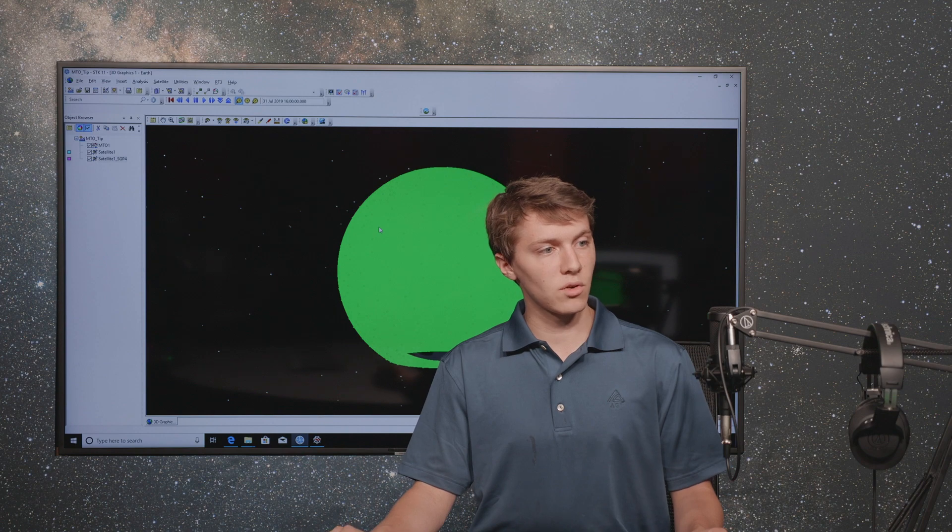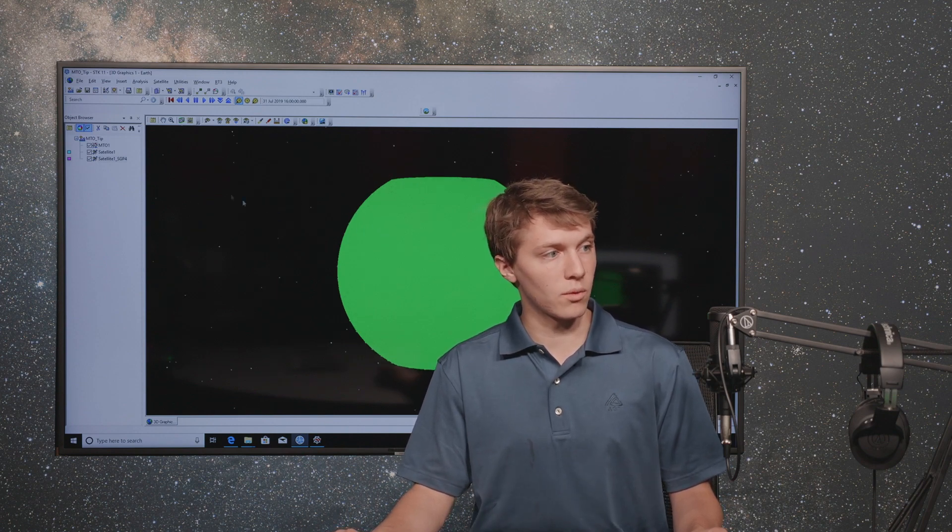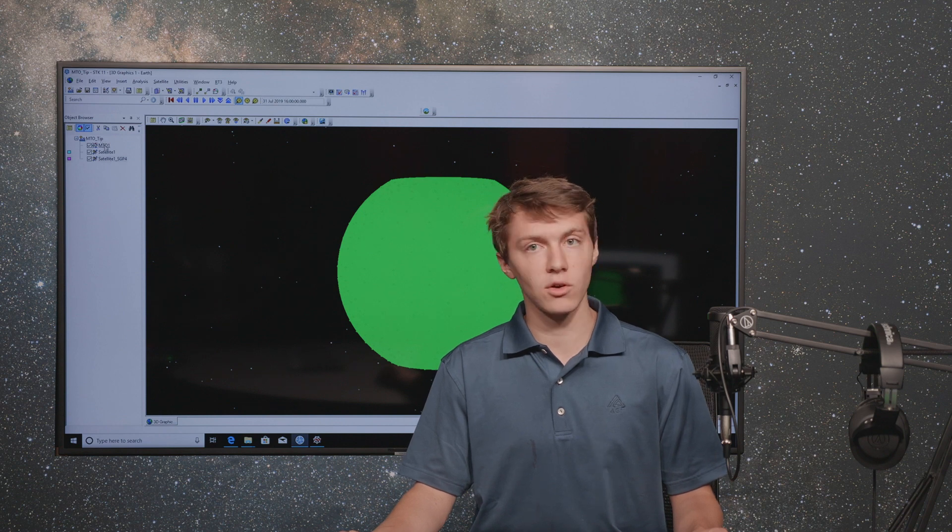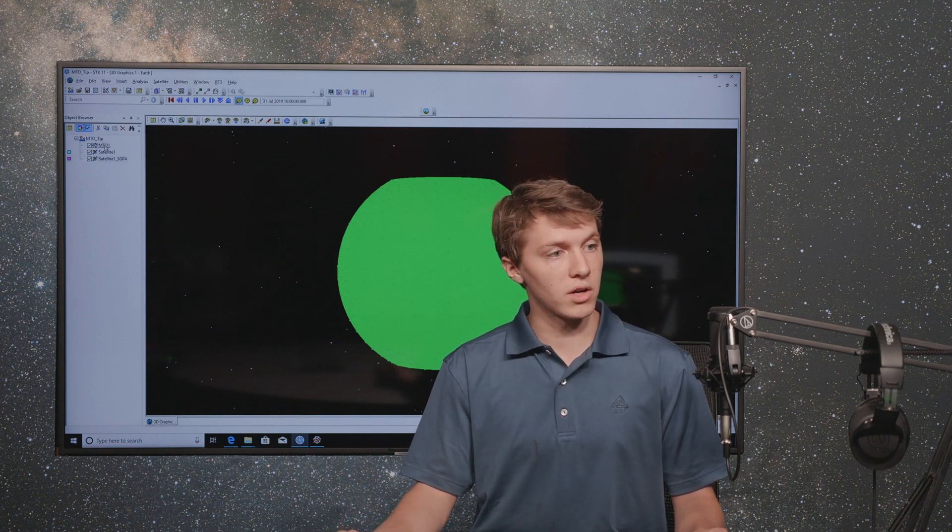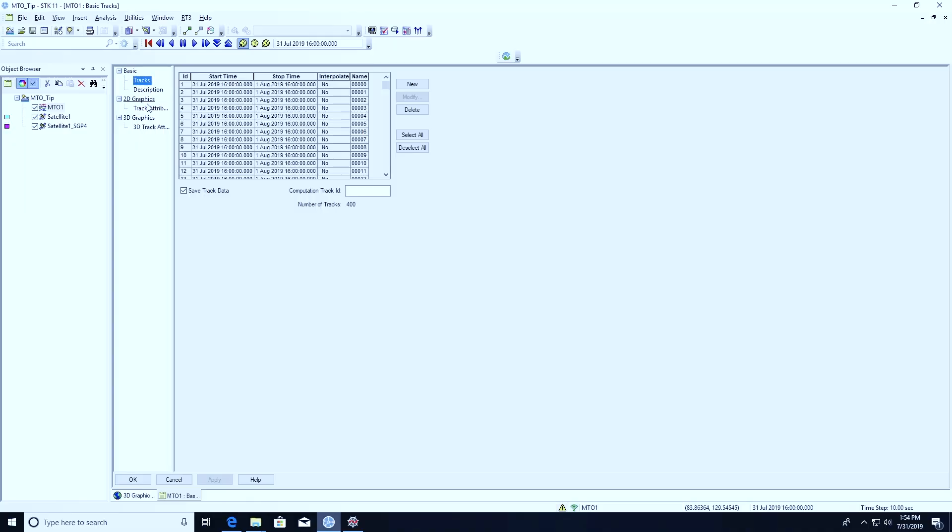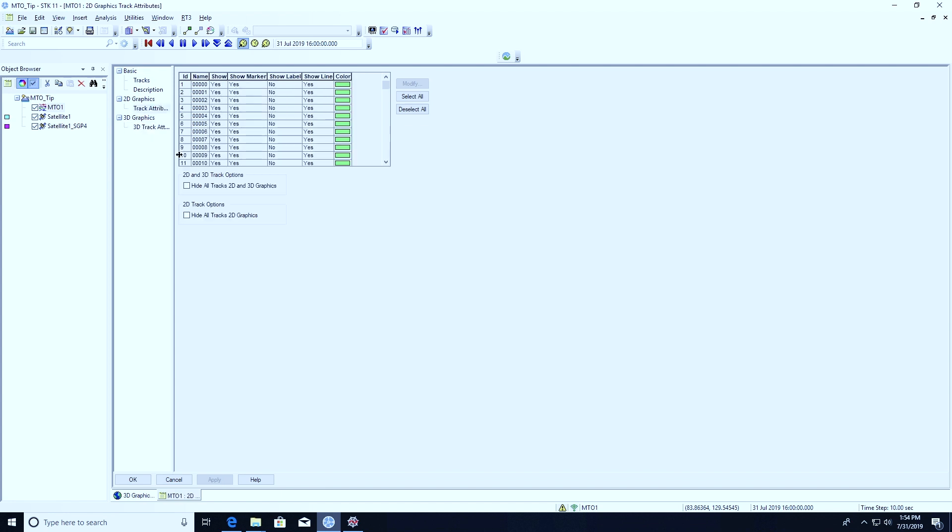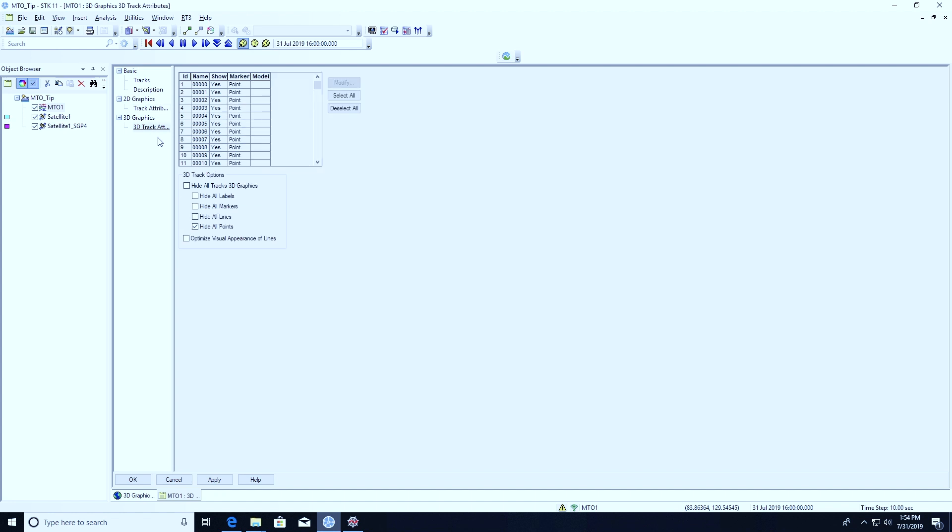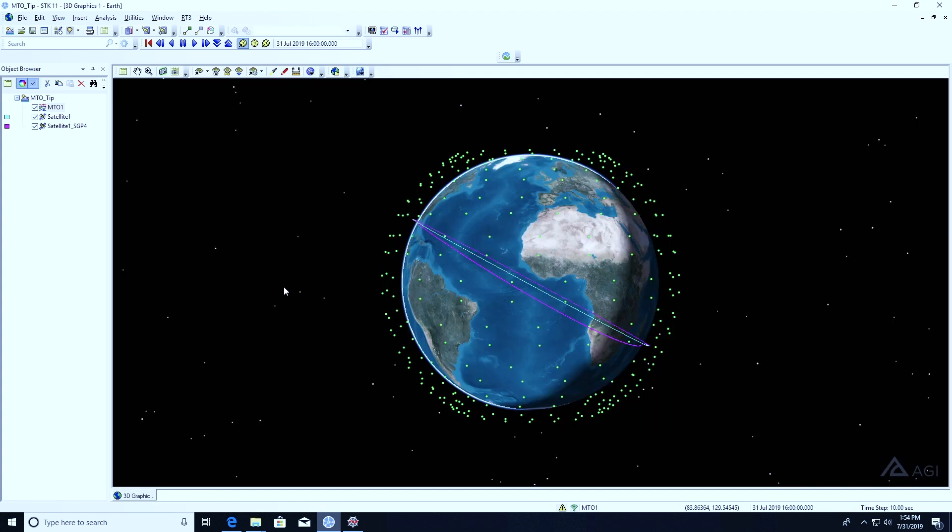You'll notice here that this doesn't really look like a bunch of satellites. This looks like a shell all around the world. The reason for that is that we've got our MTO lines turned on by default. So we're going to get rid of those by opening the properties for the MTO, double clicking it in the object browser. I'm going to scroll over to 2D graphics, track attributes. I'm going to hide the tracks from the 2D graphics in case you're looking at the ground tracks. And we're also going to hide the lines in the 3D graphics window. I'm going to click OK to save these changes and close out the window.